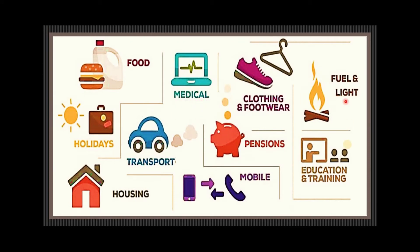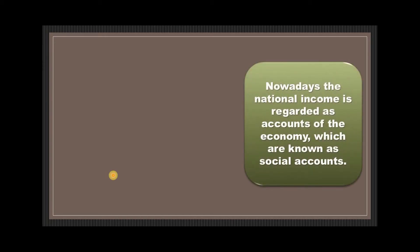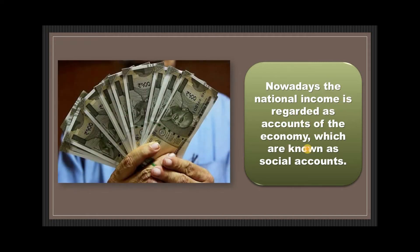Other goods and services include clothing, footwear, fuel, light, education, training, mobile phones, transport, housing, holidays, and food — every single thing. The more of these goods and services the economy produces, the more we will have available for consumption and the better off we will be. So the national income accounts provide information on the pattern of economic activity. Nowadays, national income is regarded as accounts of the economy, known as social accounts.